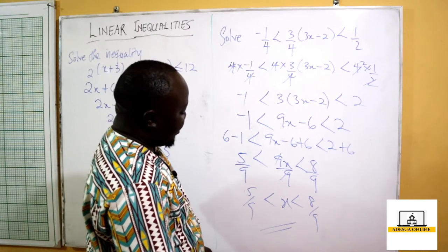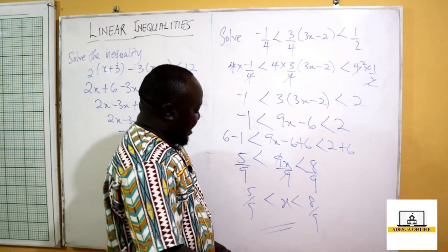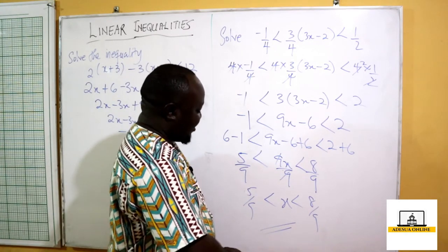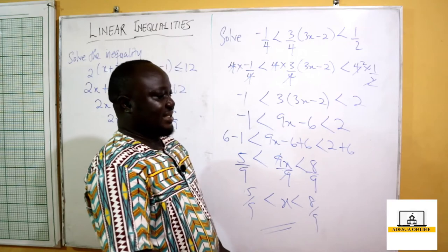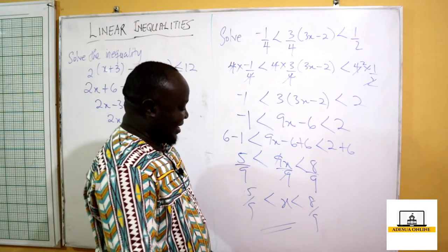So this becomes our solution, and we can read this as x is greater than 5/9 and less than 8/9.